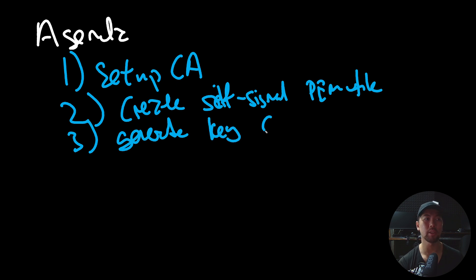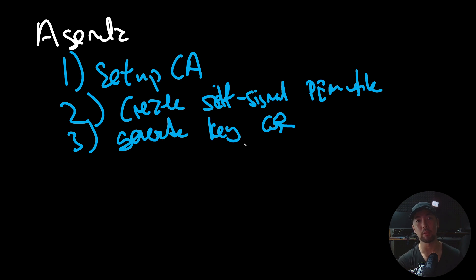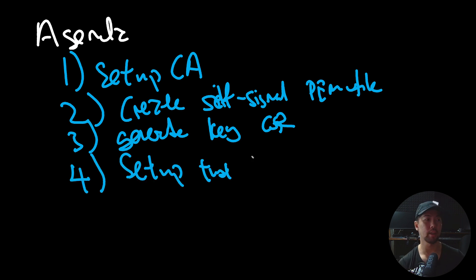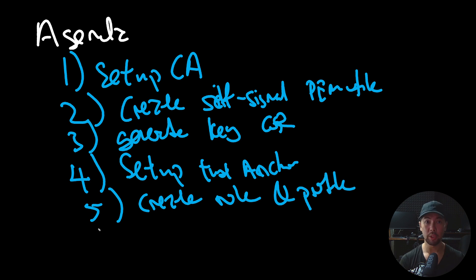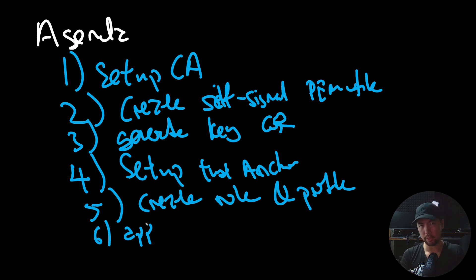Generate the client key as well as the CSR file. Then we will generate a client.pem file to be used as an option when using AWS IAM Roles Anywhere. Number four, we'll set up the trust anchor from AWS IAM Roles Anywhere. Number five, we'll create the role in AWS IAM as well as the profile in AWS IAM Roles Anywhere. At the end, I'll show you an example of a script that leverages AWS IAM roles to get temporary credentials and access an AWS account.